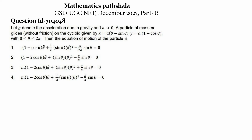Let z denote the acceleration due to gravity and a > 0. A particle of mass m glides without friction on the cycloid given by x = a(θ - sinθ), y = a(1 + cosθ), with 0 ≤ θ ≤ 2π. Then the equation of motion of the particle is — there are four options. We have to find the equation of motion of the particle.